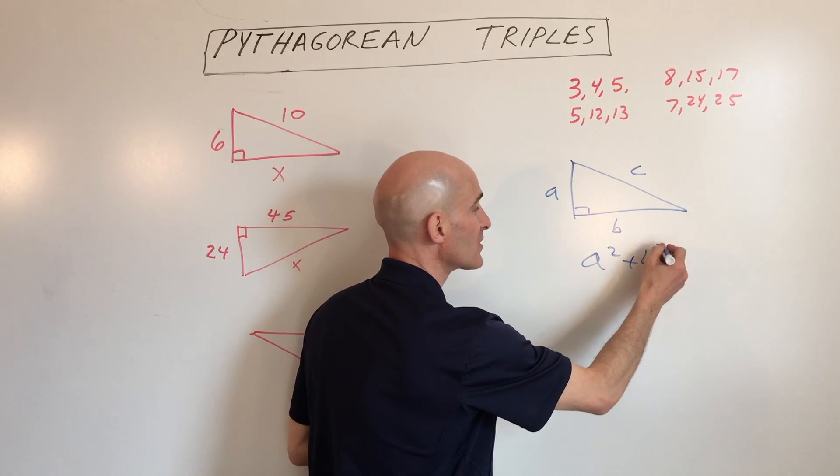That looks like the 3, 4, 5 Pythagorean triple. 5 is the longest side, so that's the hypotenuse. Yep, that's the hypotenuse across from the right angle. So that means that this side must be 4.